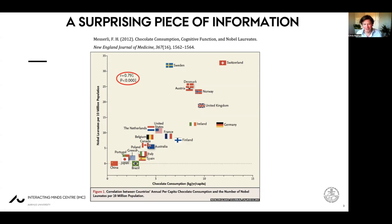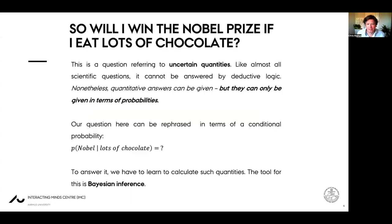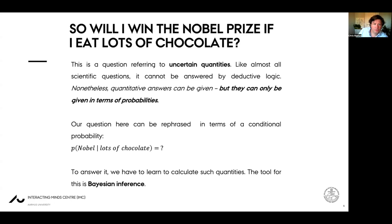Lots of fun things can be seen here. For instance, the Germans: lots of chocolate eating, but not much effect on Nobel prizes. On the other hand, the Swedes get lots of Nobel prizes out of relatively little chocolate eating, which may have to do with them being the ones handing out the Nobel prizes. And then at the top right, you have Switzerland — and that tells you where the author of the study came from. The question we will deal with is: will I win the Nobel prize if I eat lots of chocolate? This is the kind of question that cannot be answered by deductive logic, yet we can make quantitative statements about relations like this — only in terms of probabilities.